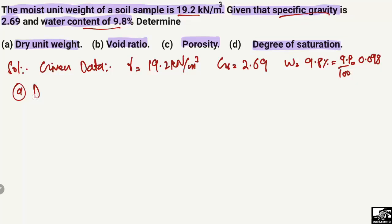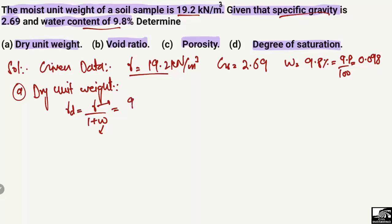To find out the dry unit weight for this soil sample, we use the most commonly used formula in soil mechanics: gamma_d is equal to gamma divided by 1 plus w, where gamma is the moist unit weight of the soil sample and w is the water content in decimal units. The moist unit weight is known to us, which is 19.2.